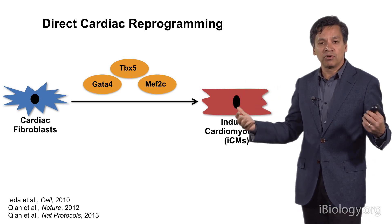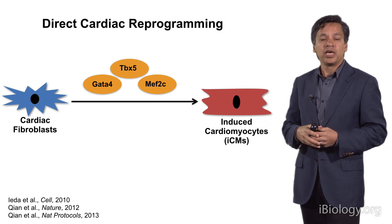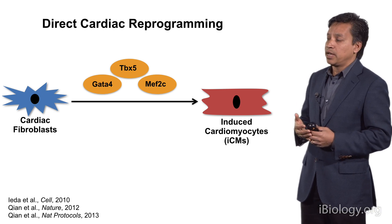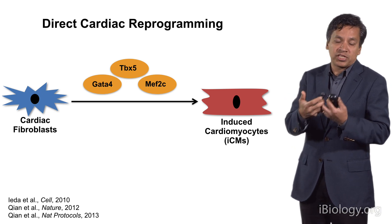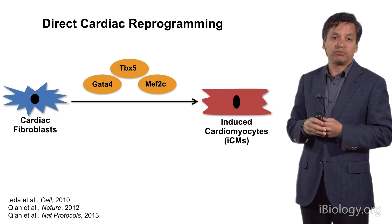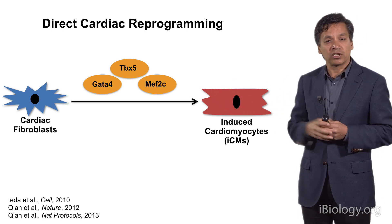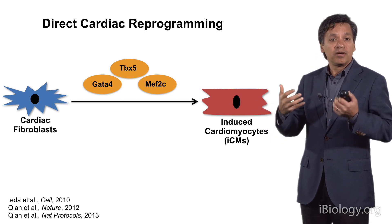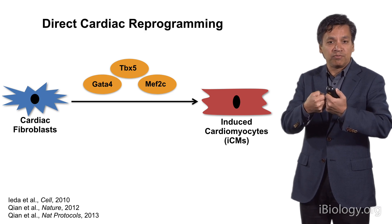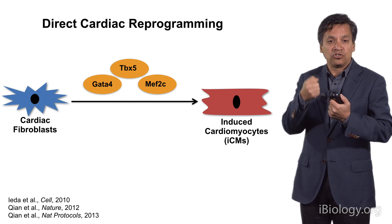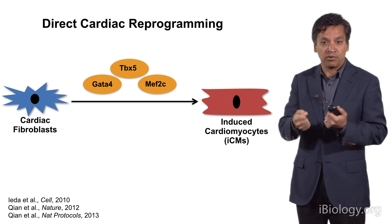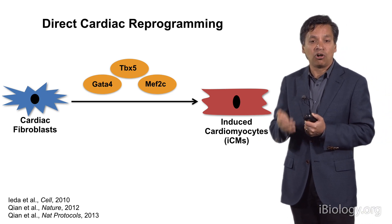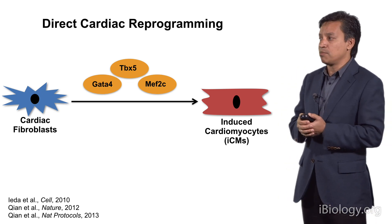When we screened a large number of transcription factors and microRNAs that we knew to be critical for development of the heart, and asked what was the minimal essential cocktail, it turned out to be three factors: two of which we've talked about extensively already, GATA4 and TBX5 — and that makes sense because these two proteins sit together to drive cardiac cell fate during embryogenesis — and a third really critical factor, MEF2C, that's also essential for normal cardiac formation in an embryo.